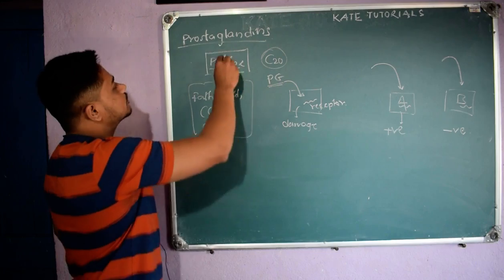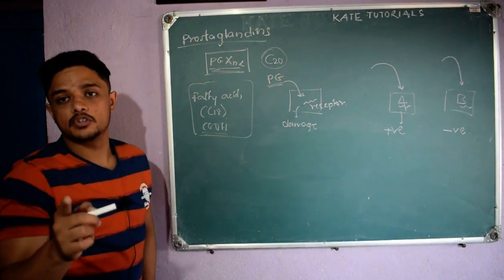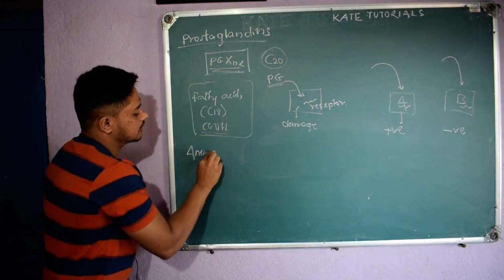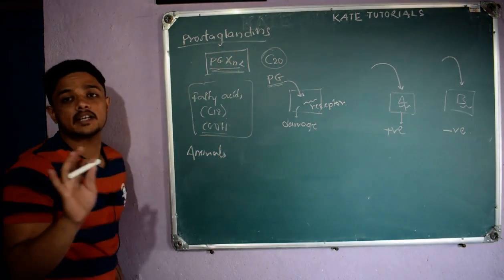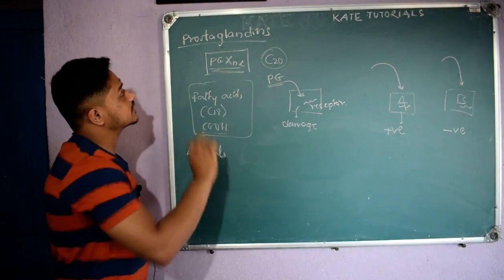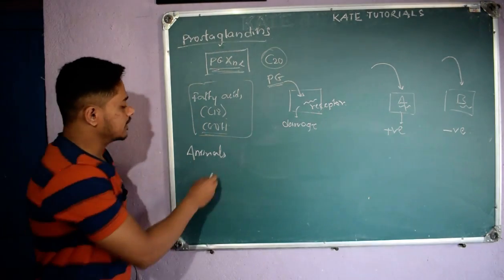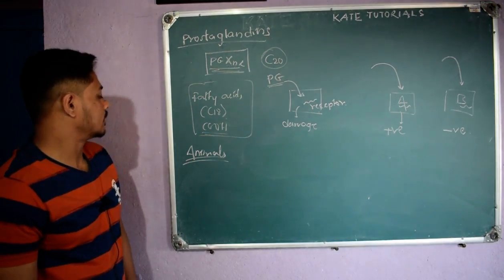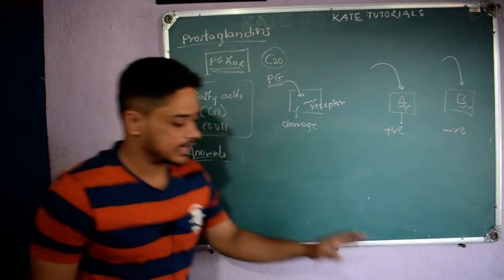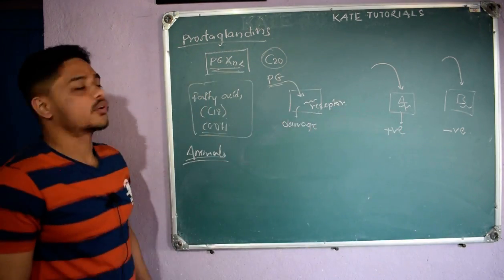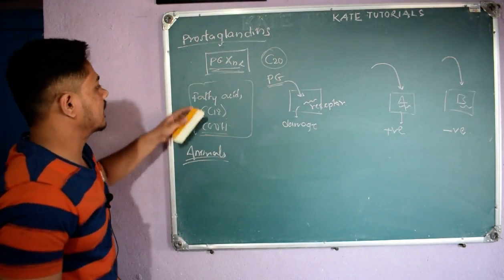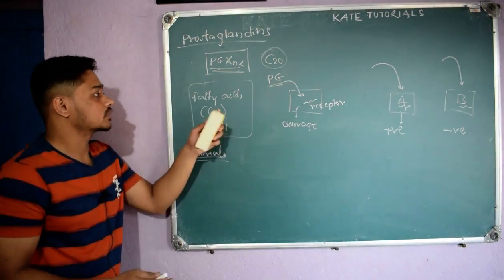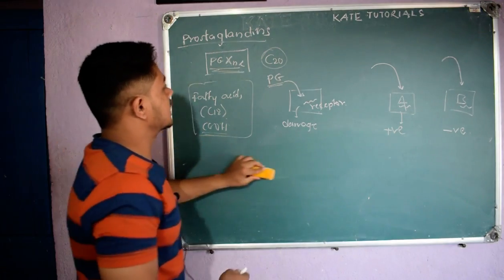One more important thing: prostaglandins are only produced in mammals, that is, they are only produced in animals. They are not produced in plants. We study this in natural products in the animal system. So prostaglandins are present in animals, and they are nothing but fatty acids — or sometimes we call them lipids.